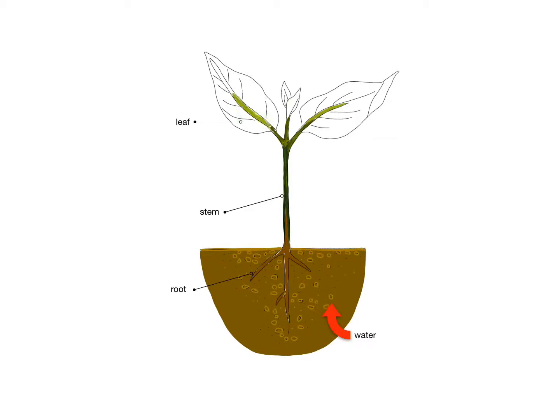Water enters the leaves, primarily through the roots. These roots are especially designed to draw the ground water and transport it to the leaves through the stem.